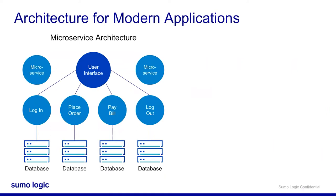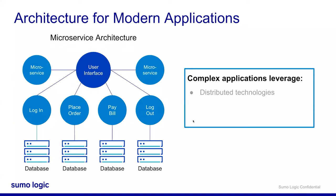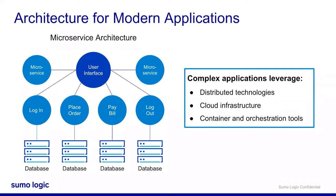Modern applications are increasingly complex and microservices architecture is beneficial for these complex, evolving applications. These applications leverage distributed technologies, cloud infrastructure, and container and orchestration tools such as Docker and Kubernetes. The connections between microservices, orchestrators, and underlying cloud resources are also growing in complexity, leading to unknown unknowns with mysterious behaviors and failure modes.